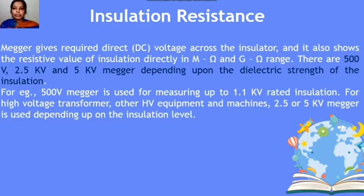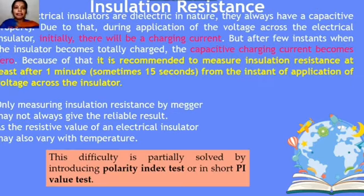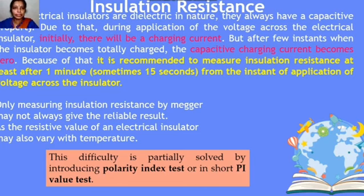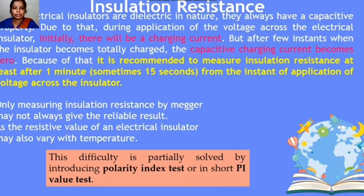All electric insulators are dielectric in nature and have capacitive properties. During application of voltage, initially there will be a charging current, which will decay exponentially to zero after a few seconds. It is therefore recommended to measure insulation resistance at least after one minute from the instant of application of voltage. Measuring by megger alone may not always give reliable results as insulation resistance also varies with temperature. This difficulty is partially solved by the polarization index (PI) test.